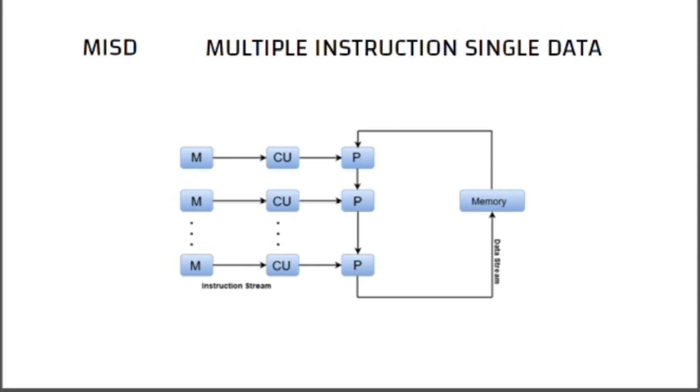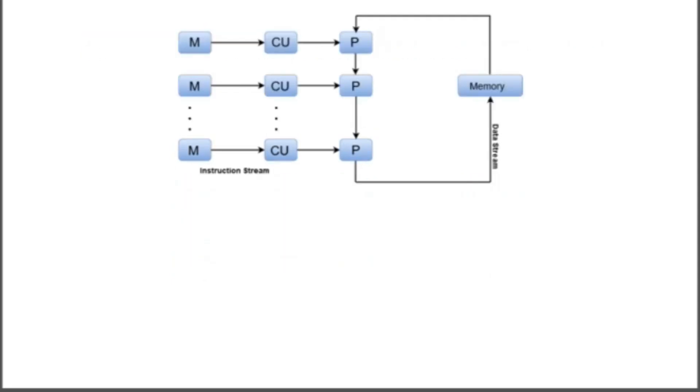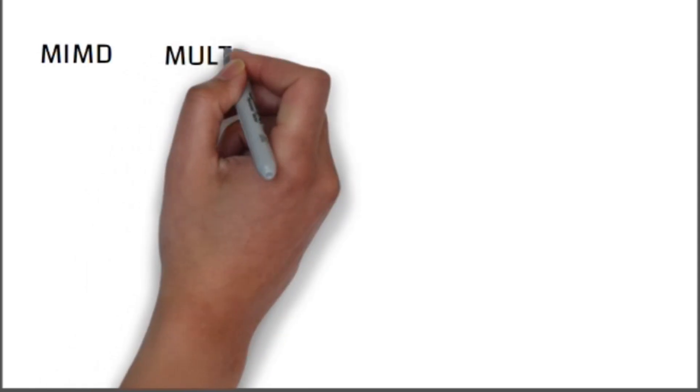In MISD, all processor units have an individual control unit, so the instructions are fetched by the shared memory and multiple instructions are given to the processor units. The structure of MISD is of theoretical interest since no practical system has been constructed using this organization. In this, multiple processing units operate on one single data stream. Each processing unit operates the data independently via separate instruction streams.